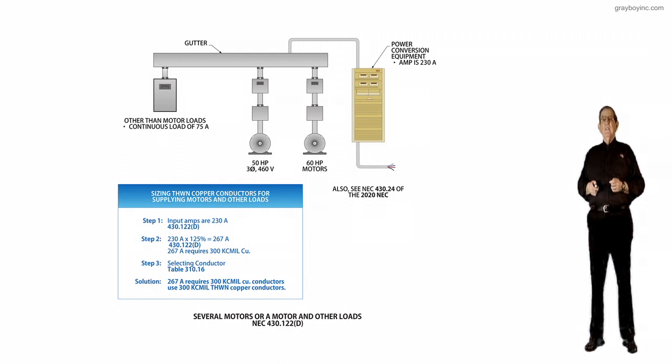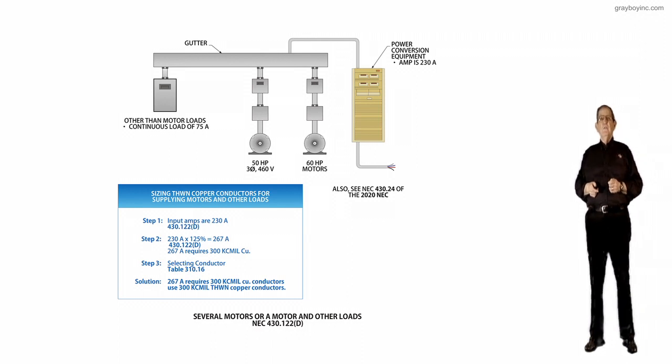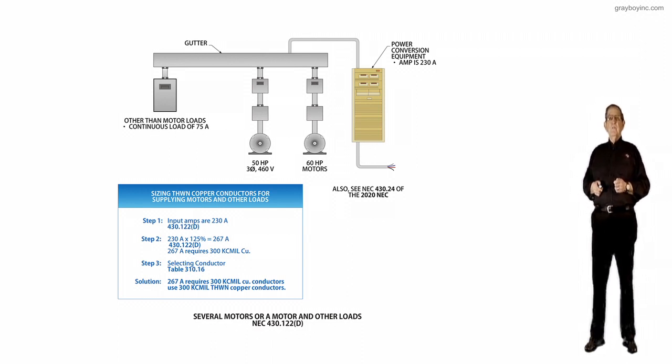So step two, we take 125% of that 230 amps. We come up with a math calculation of 267 amps. Now, we want to continue applying 430.122D.